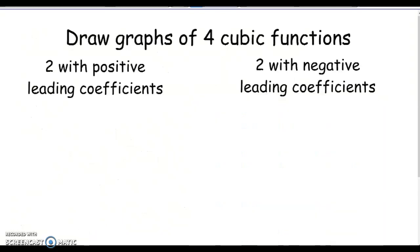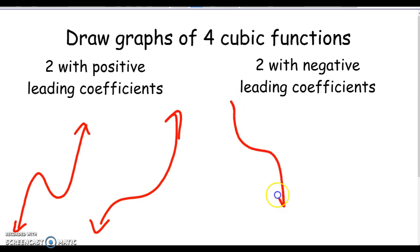So go to the next slide, draw graphs of four cubic functions, two with positive leading coefficients, two with negative. Well, what do you know if it's positive? You know, it starts low, ends high. So there's one. And I don't know, you draw another one. Not quite as pretty. What if it's got a negative leading coefficient? Yeah, then it just starts high, ends low. So these are things you know.